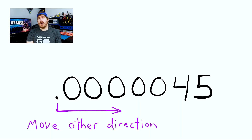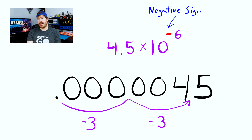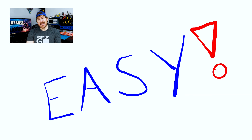All right, let's check out some small numbers now. For small numbers, we just move the decimal in the other direction and use a negative sign with the exponent for the power of 10. Here's an example. We're still moving the decimal in multiples of 3, just the other direction now, and we end up with 4.5 times 10 to the power of negative 6. Easy.